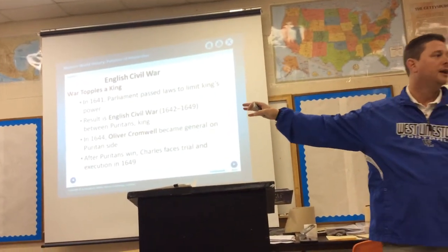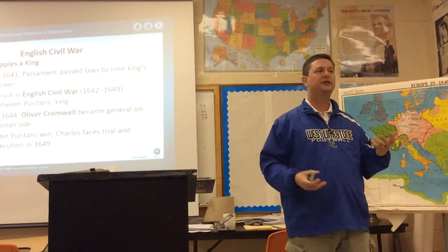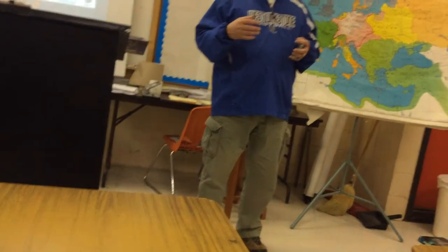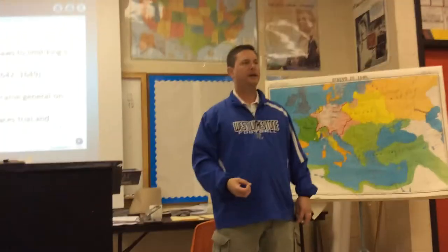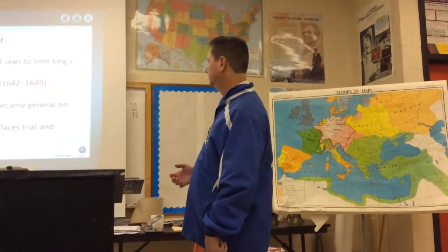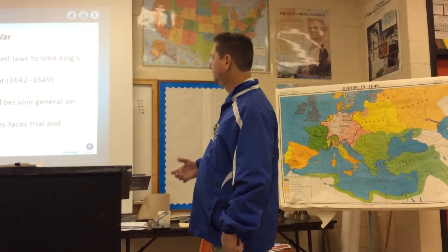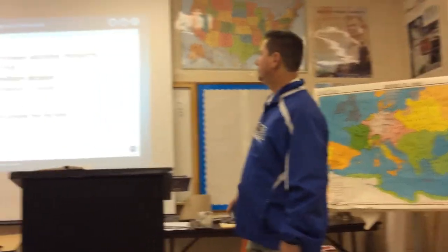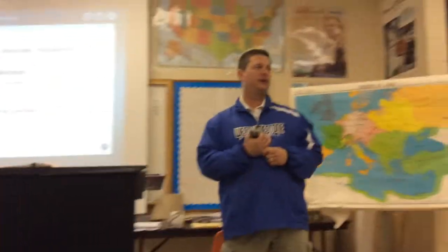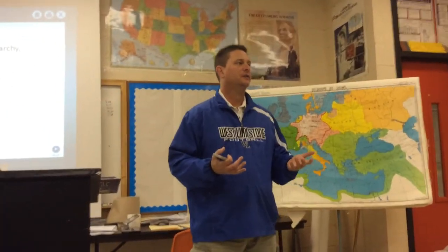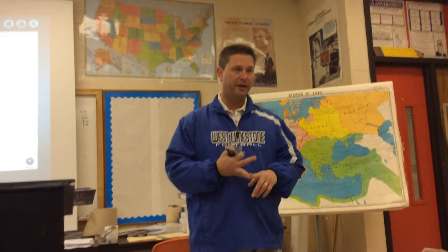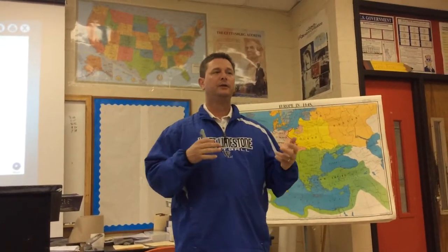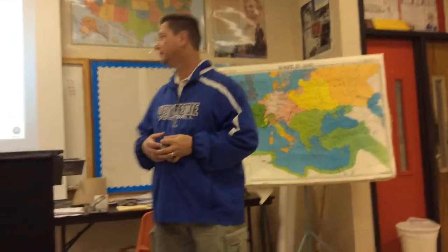Oliver Cromwell — you can circle him — was the guy who took over with his group of Puritans. They fought the war against the Royalists, the ones who supported the king, and they won. Oliver Cromwell abolished the monarchy and became basically a dictator, because he was the general. He also abolished the House of Lords, which was half of Parliament — the landowning types.